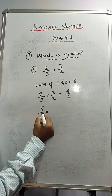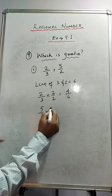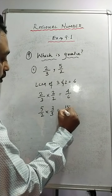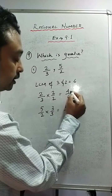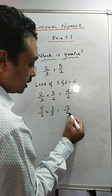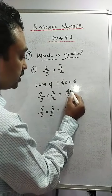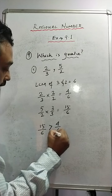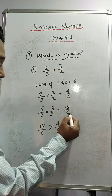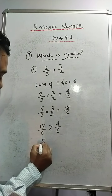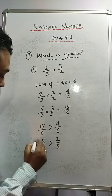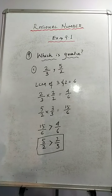For the second rational number, 6 divided by 2 is 3. So 3 into 5 and 3 into 2 gives 15 upon 6. Now we can easily compare the two rational numbers as the denominators are the same. 15 by 6 is greater than 4 upon 6. And 15 by 6 comes from 5 by 2, which is greater than 2 by 3. This is the solution of sum number 1.